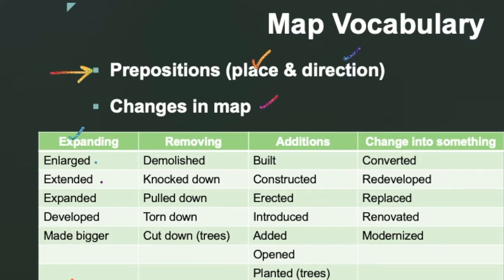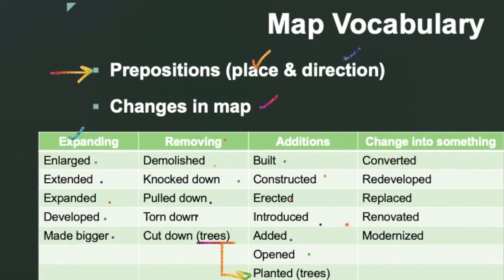Also for expansion: 'expanded,' 'developed,' 'made bigger.' For removal you can use 'demolish,' 'knock down,' 'pull down,' 'torn down,' and for trees, 'cut down.' If trees are added, say 'plantation of trees,' 'trees were planted,' or 'forests were planted.' For an addition like a building or facility: 'built,' 'constructed,' 'erected,' 'introduced,' 'added,' 'opened.' If something is changed from one thing to another, use 'converted,' 'redeveloped,' 'replaced,' 'renovated,' 'modernized,' etc.